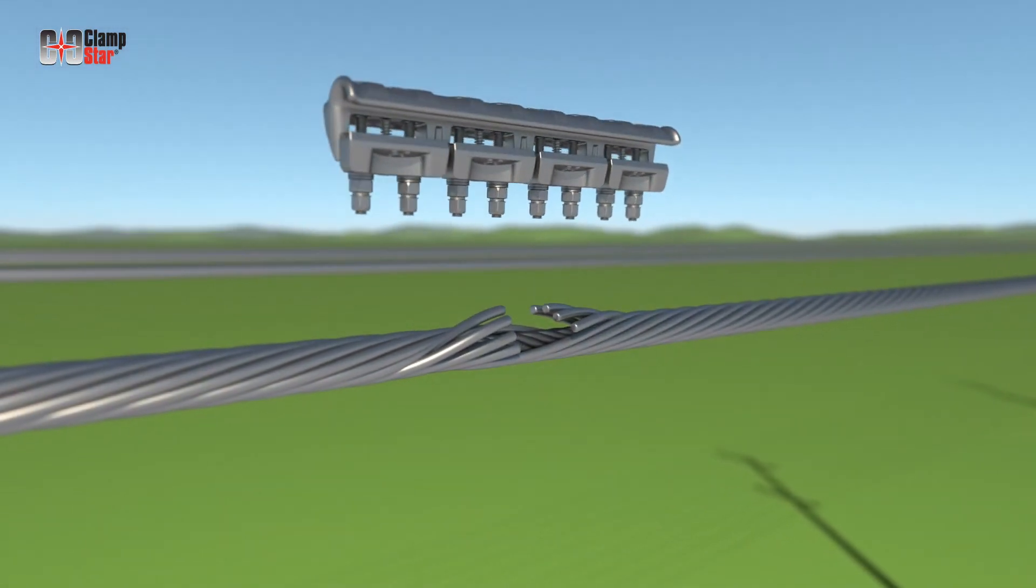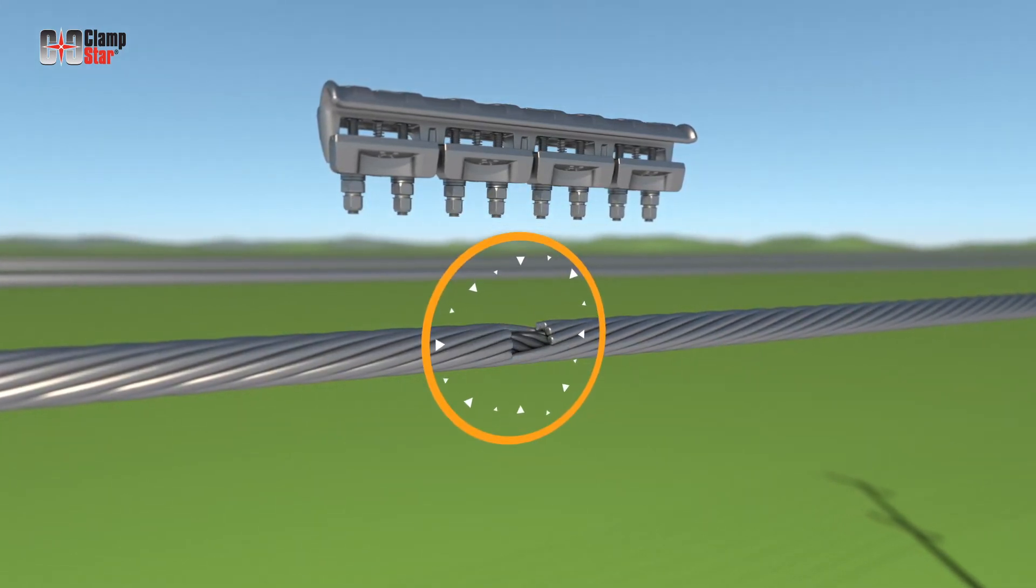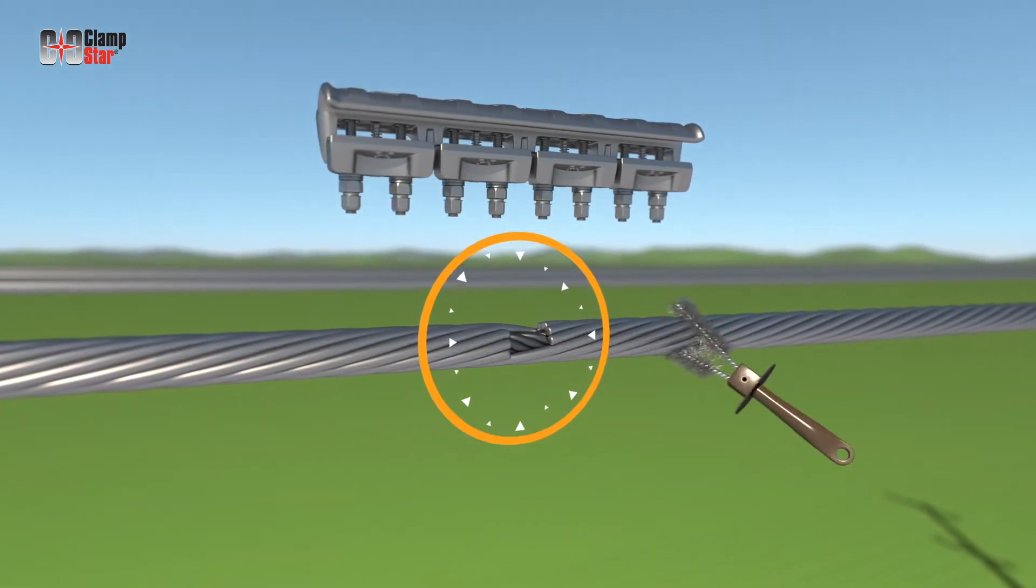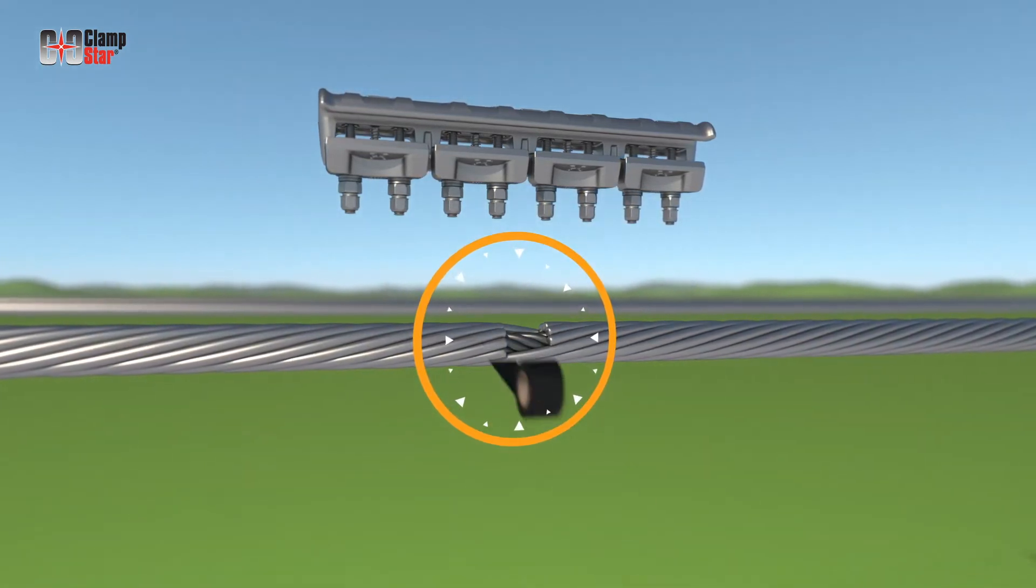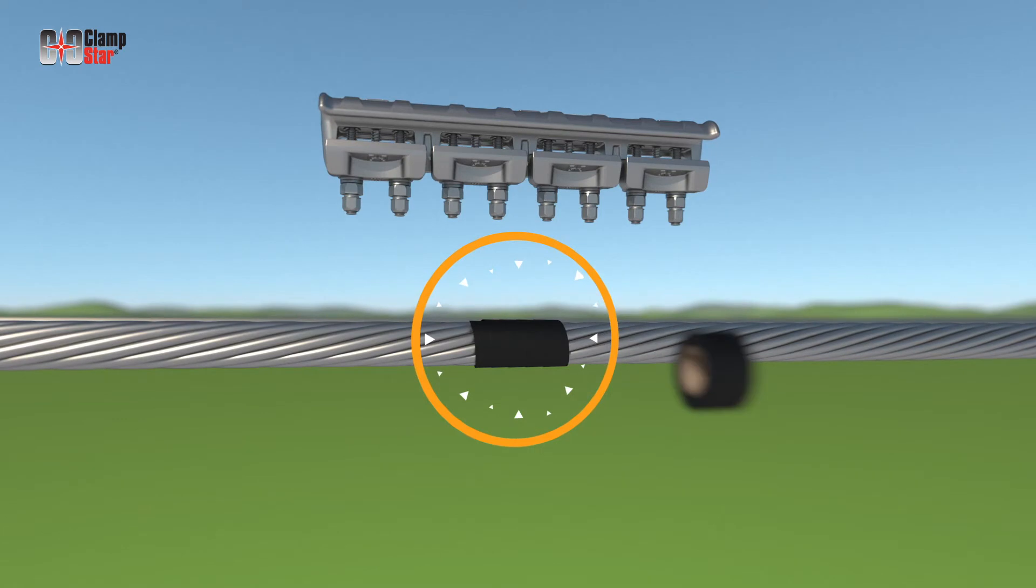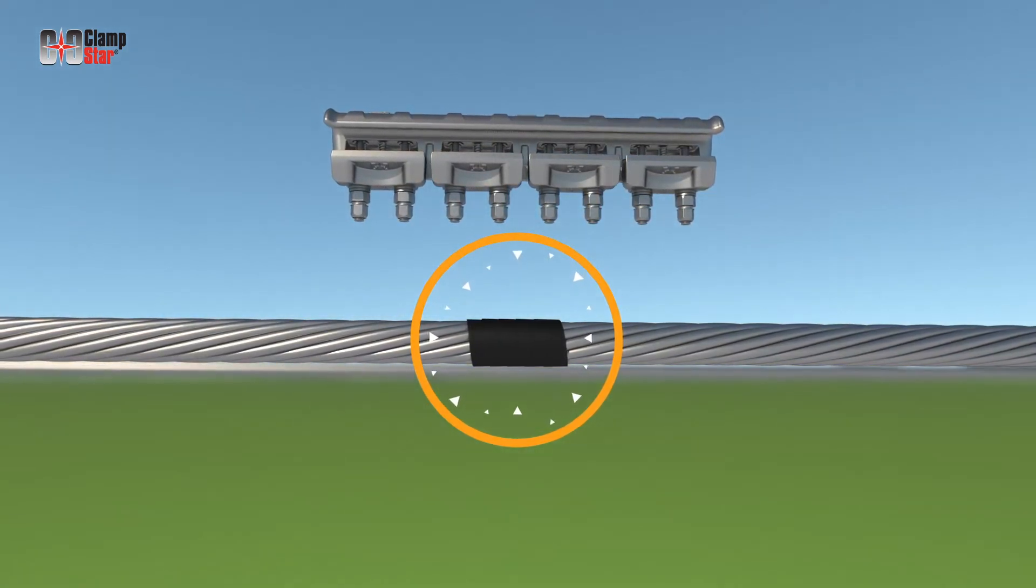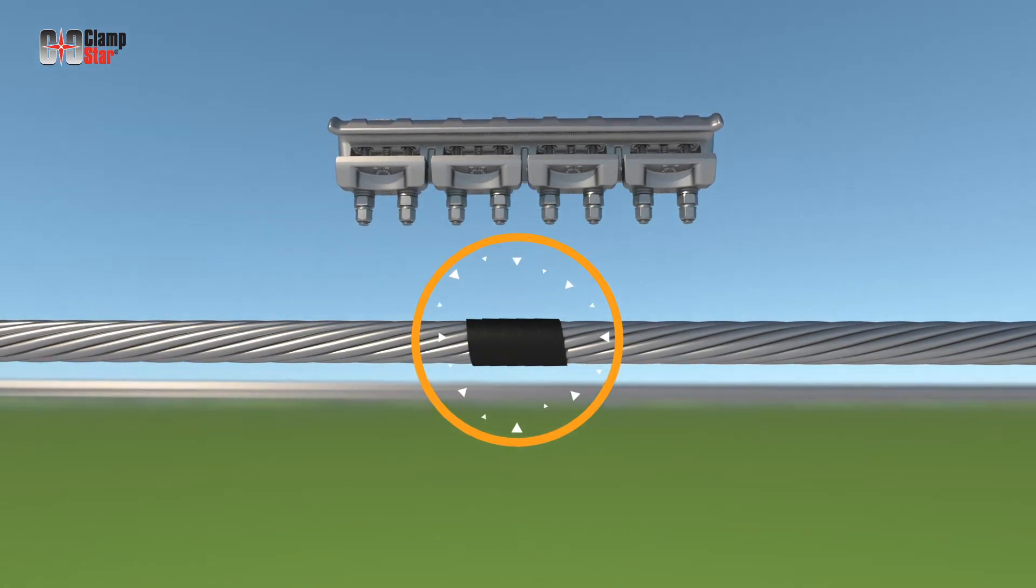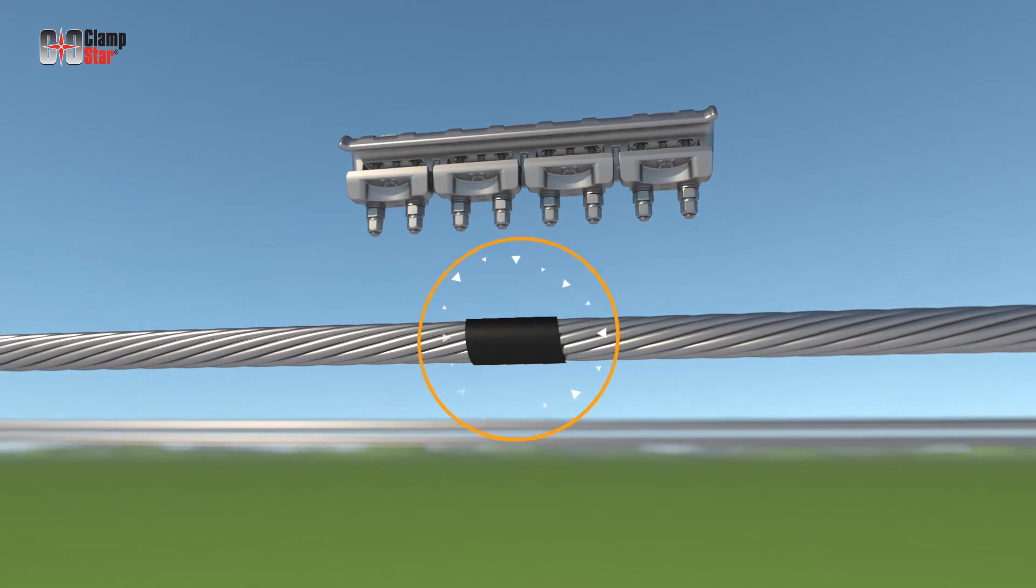Prior to installing the ClampStar, the conductor must be properly prepared by correcting the lay of the wire strands and scratch brushing the area that will be in contact with the ClampStar unit. If necessary, a minimal amount of tape can be used to keep the strands in place. The inhibitor is preloaded from the factory in the conductor grooves of the ClampStar and on the keepers as required. No other inhibitor is to be used.